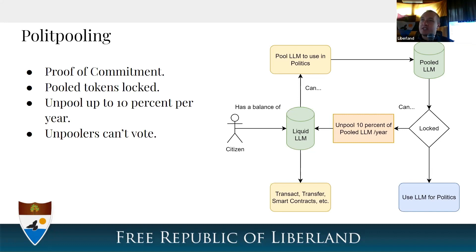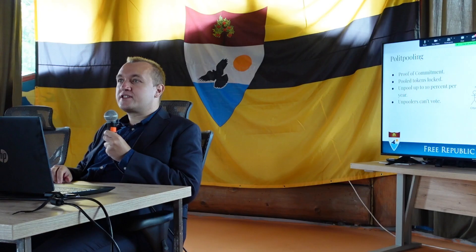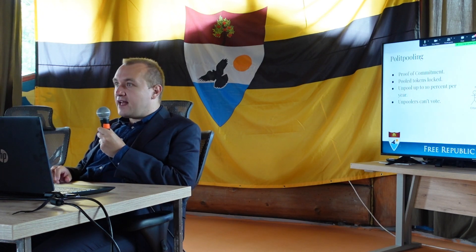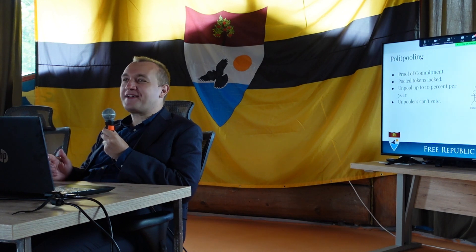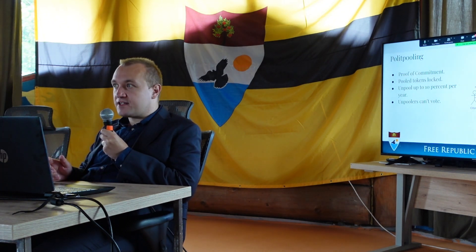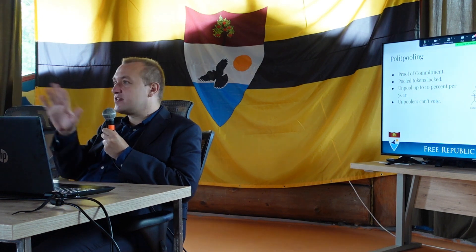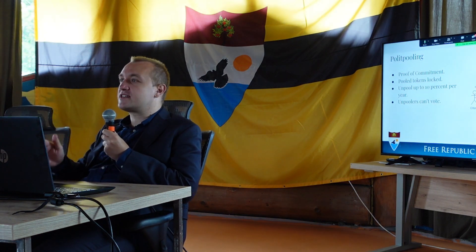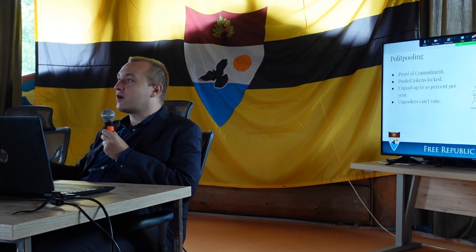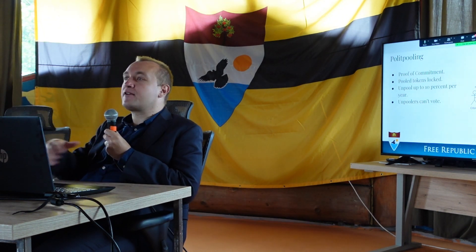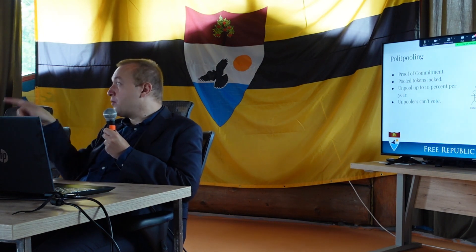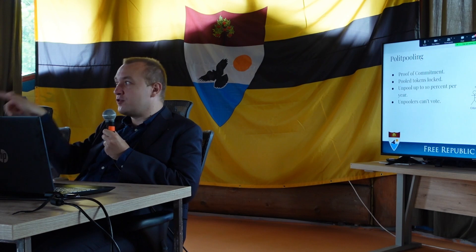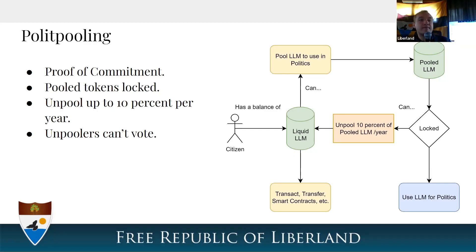What you do instead is commit your LLM into Liberland via long-term vesting — what we call political pooling. Pooled LLM tokens can vote, and they have the ability to vote on multiple referenda at once. That's a big difference from Polkadot where you have to allocate tokens between referenda. In Liberland you can use one LLM to vote in all five concurrent referenda — though only once per referendum, as a new vote replaces the old.